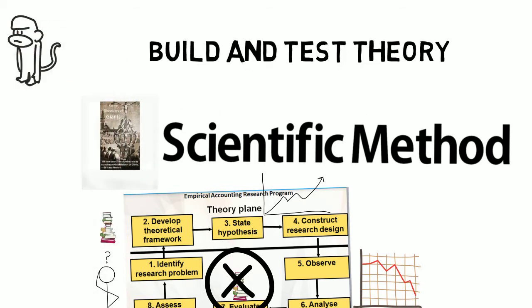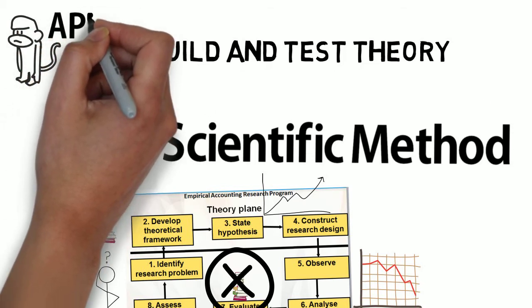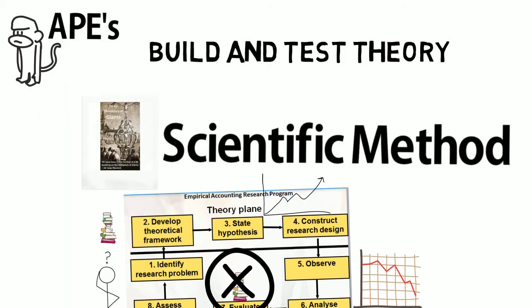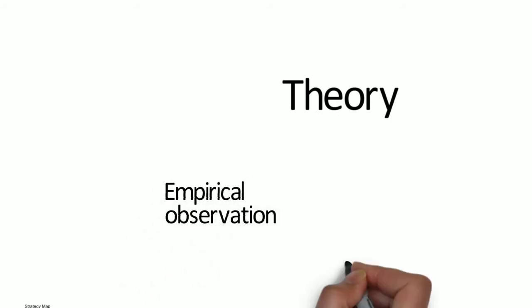For what we observe, there may be various alternative plausible explanations, or APEs. Through the scientific method, we can find those theories that are best able to describe, explain, and predict the world around us.